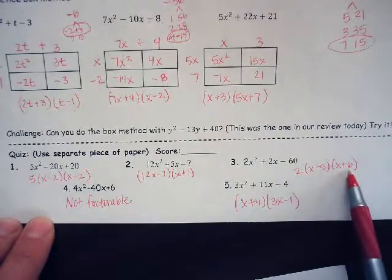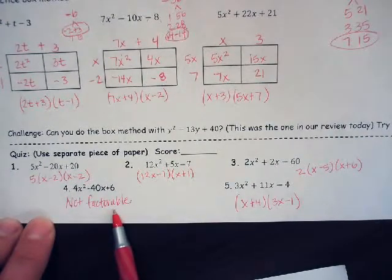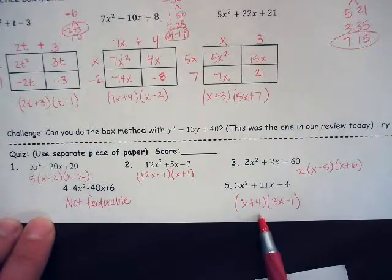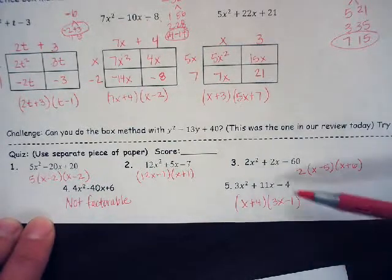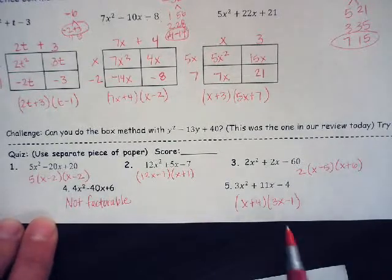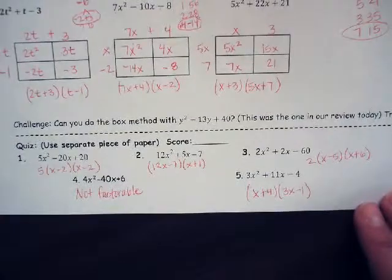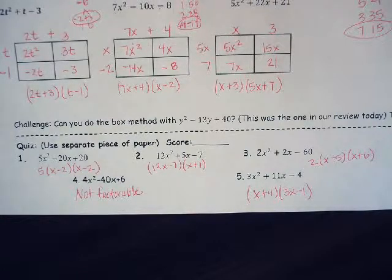Number three was also factoring out the greatest common factor and then solving. Number four was not factorable — if you got stuck on that one, it's because you couldn't do it. Number five is x plus 4 times 3x minus 1. Go back and foil all of these to verify. If you didn't get at least four out of five correct, keep trying the box method — you'll have plenty of practice on your homework. Once you understand it, it's pretty easy. I have full confidence in you.